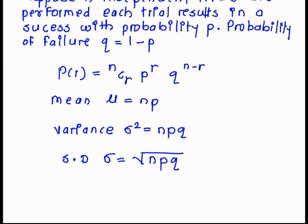So the probability of getting r successes is nCr p raised to r q raised to n minus r. Mean is equal to np, variance is equal to npq, and standard deviation SD is equal to square root of npq.